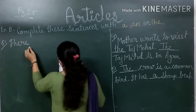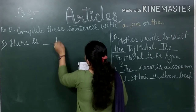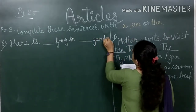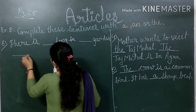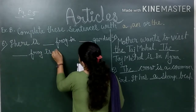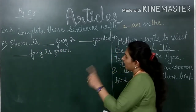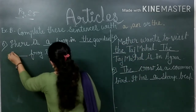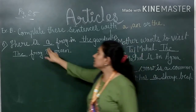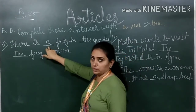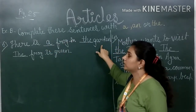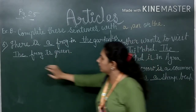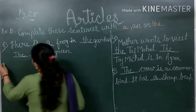Number six is: There is blank frog in blank garden. Blank frog is green. 'Frog' starts with F, a consonant, so the first mention is 'a frog'. 'Garden' is a specific place name so we use 'the garden'. Then in the second sentence, the frog has already been mentioned, so: the frog is green. Answer: There is a frog in the garden. The frog is green.